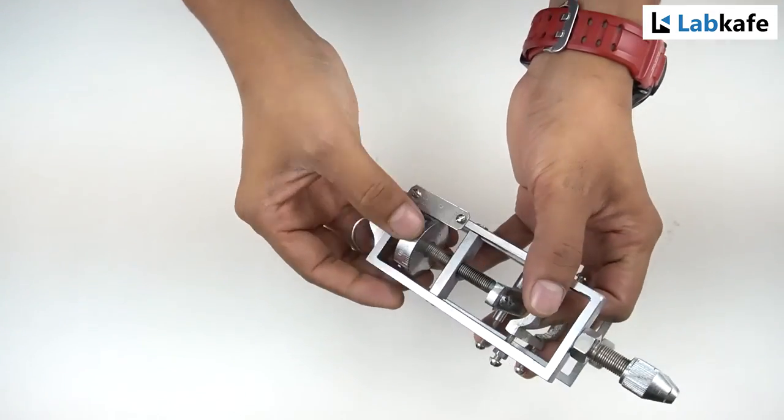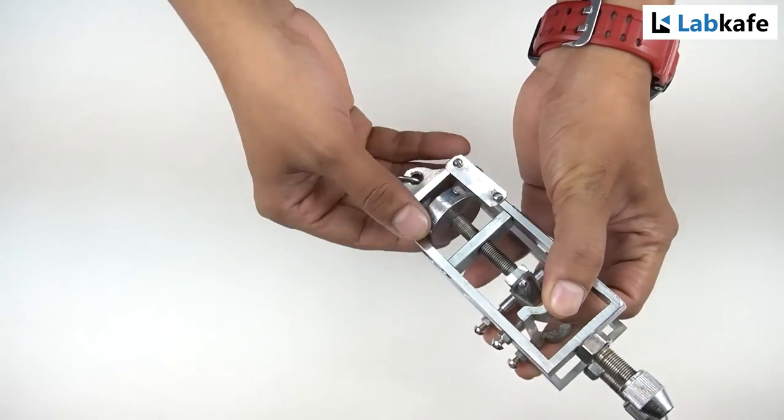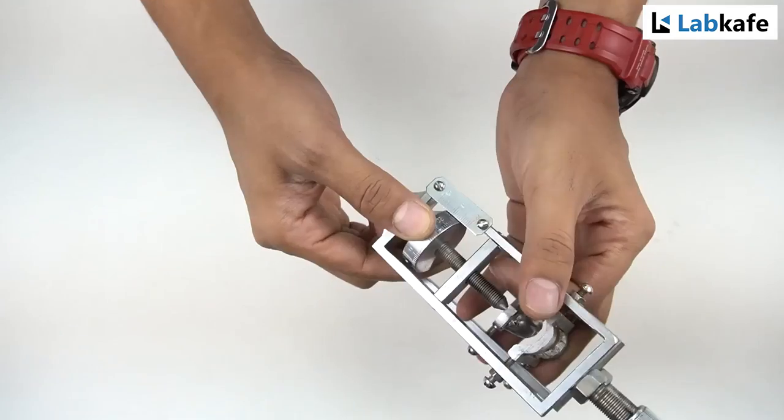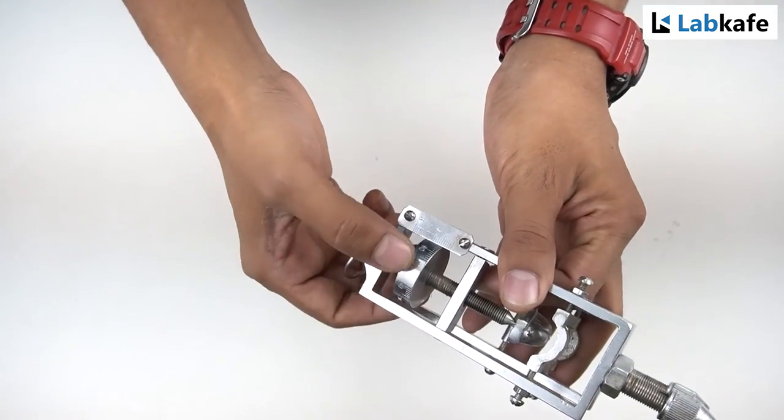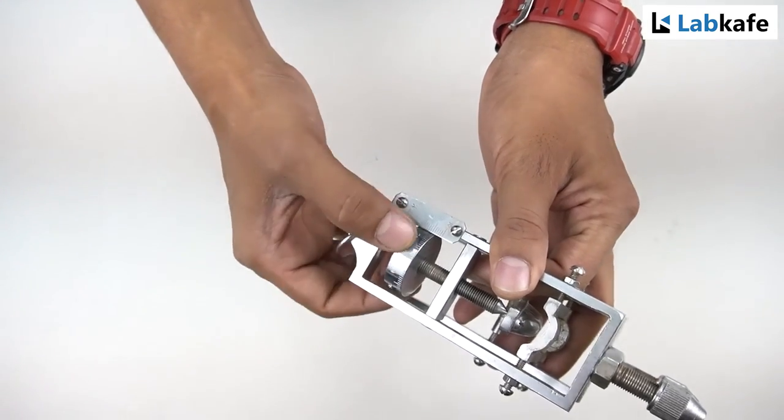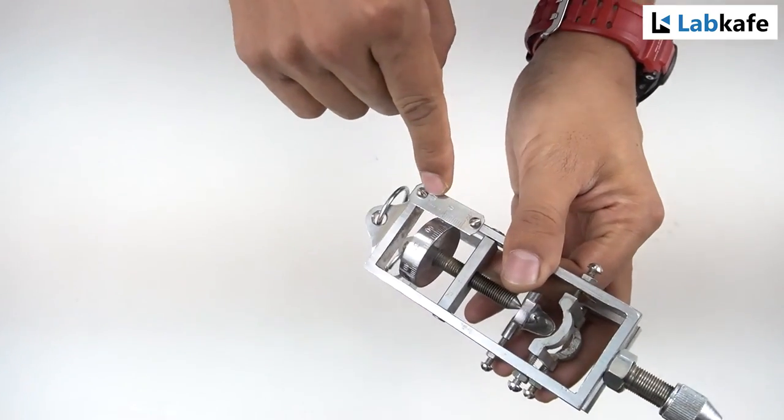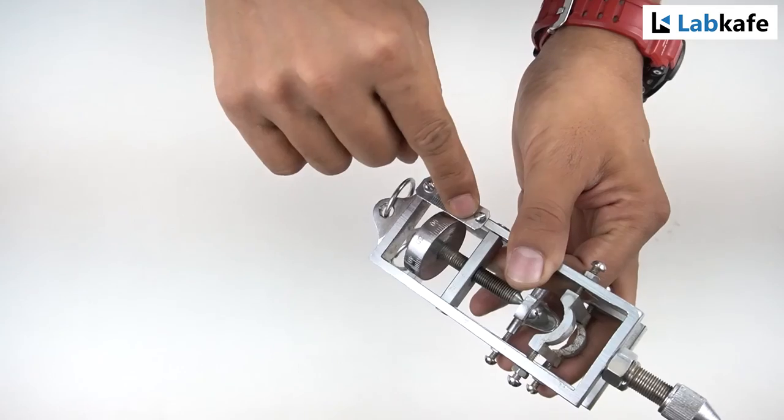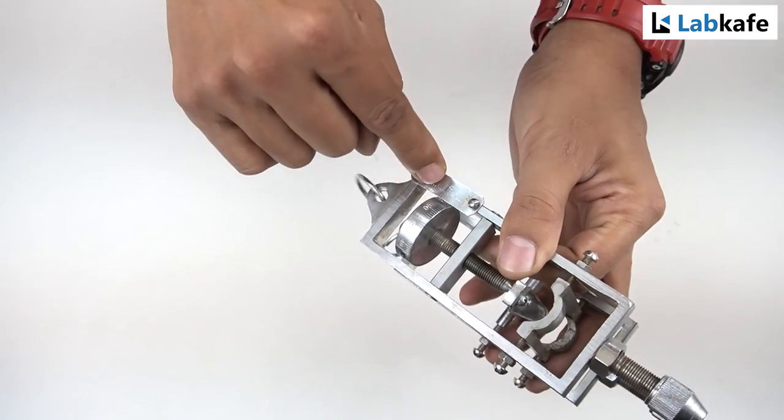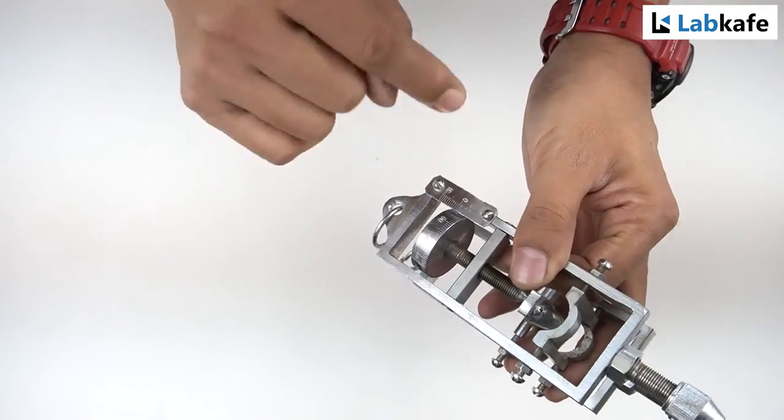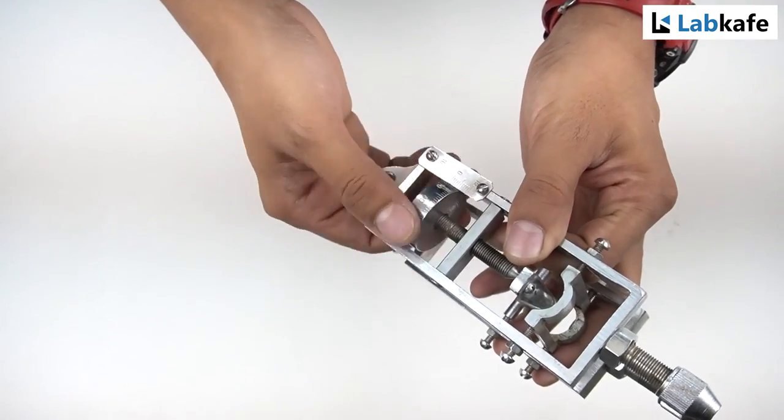Now, let's calculate the pitch and least count of this spherometer. As you can see, the circular disk has 100 divisions on it and on the main scale above zero, 10 divisions, below zero, 10 divisions, and each of the divisions are in millimeter.